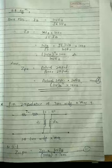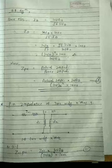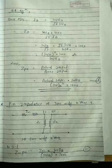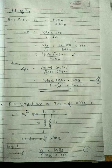Base impedance has units, but the per unit value is a dimensionless quantity — it has no unit. The per unit impedance is: Z_pu = actual impedance / Z base = actual impedance × kVA base / (kV base² × 1000).